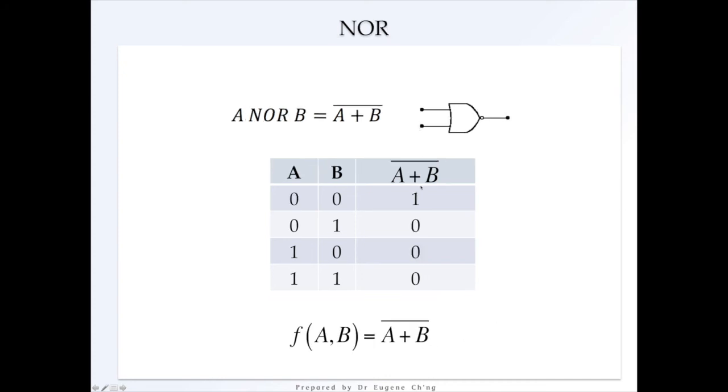So the NOR gate is also a negation of the OR. Remember in OR, we have three 1s here. But in this particular case, we have the NOR gate where both 0s are 1. So that's negating the OR. The OR gate.